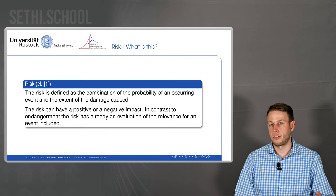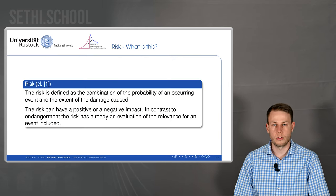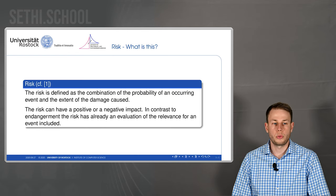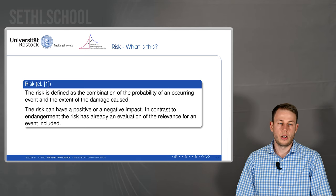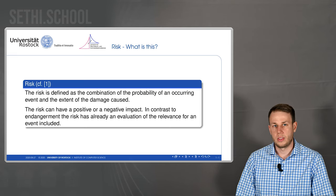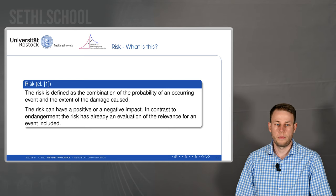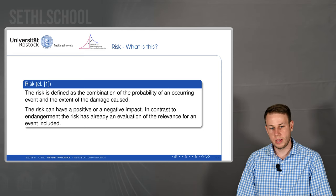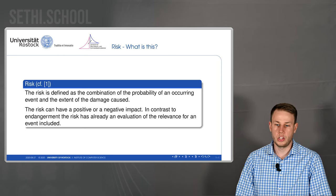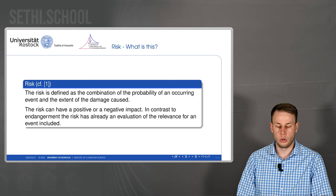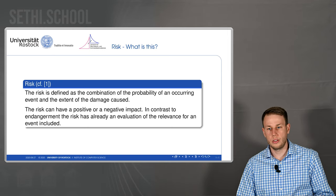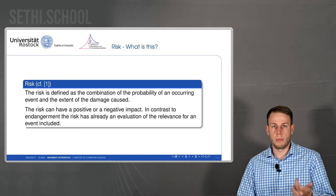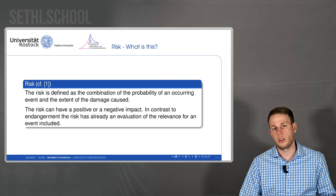First of all we want to have a look at risk in general. If you want to define it, risk is defined as the combination of the probability of an occurring event and the extent of the damage caused by this event. The risk can have a positive or negative impact. In contrast to endangerment, the risk already has an evaluation of the relevance for an event included. So risk is a combination of the probability of an event and the damage caused by it.